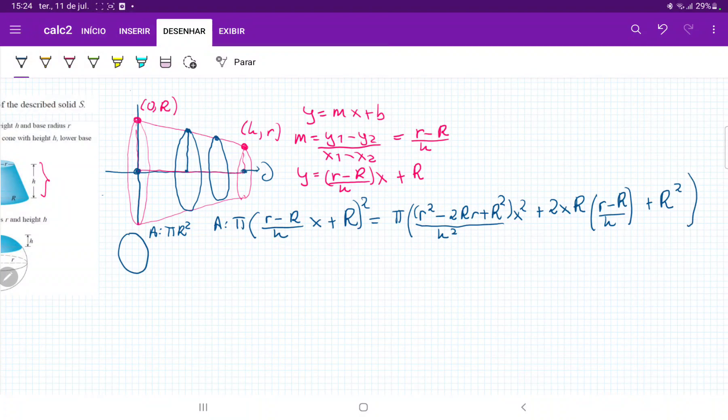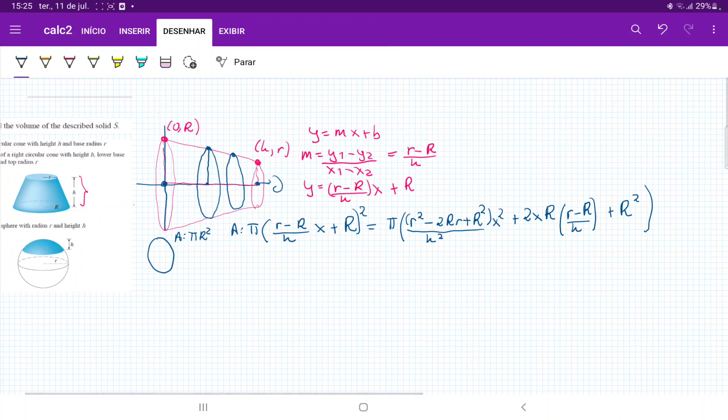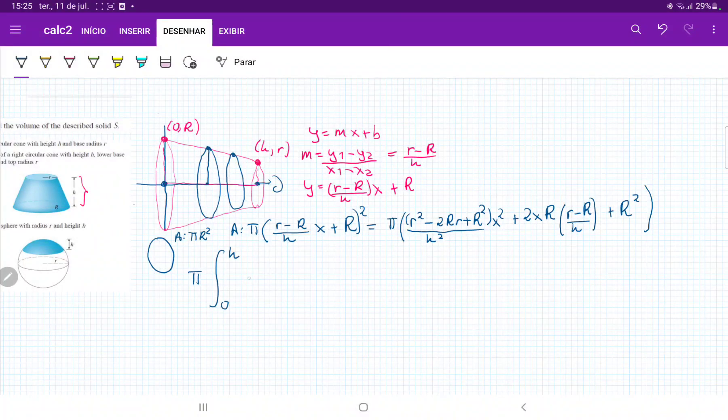So that's what we get when we FOIL it out, and once we have this expression, we're basically ready to integrate, because we're just summing up these areas from 0 to h. So we're summing up from 0 to h all this stuff right here, so that's pi times all this stuff here.